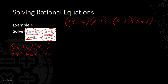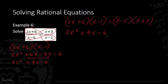For the left side, FOIL (2x + 6)(x − 1): 2x times x gives 2x squared; 2x times negative 1 gives minus 2x; 6 times x gives plus 6x; 6 times negative 1 gives minus 6. Combining similar terms: 6x minus 2x gives 4x. So the left side simplifies to 2x squared plus 4x minus 6.